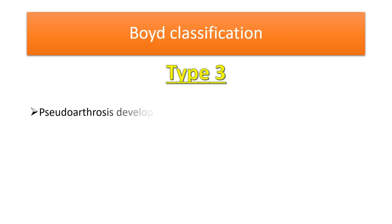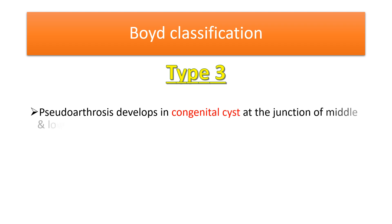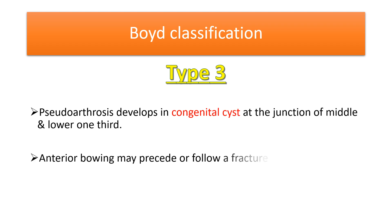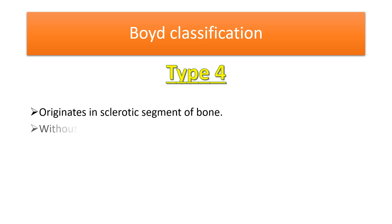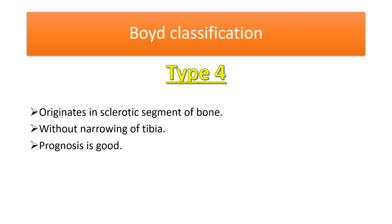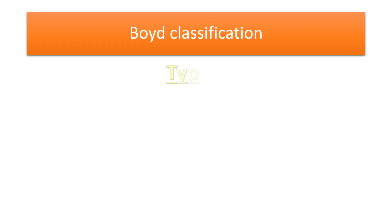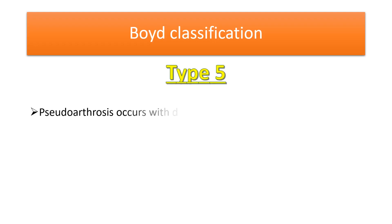In Boyd's Type 3, pseudarthrosis develops in a congenital cyst at the junction of the middle and lower one-third. Anterior bowing may precede or follow a fracture; recurrence is less common. In Boyd's Type 4, the pseudarthrosis originates in a sclerotic segment of bone without narrowing of the tibia, and the prognosis is comparatively good.